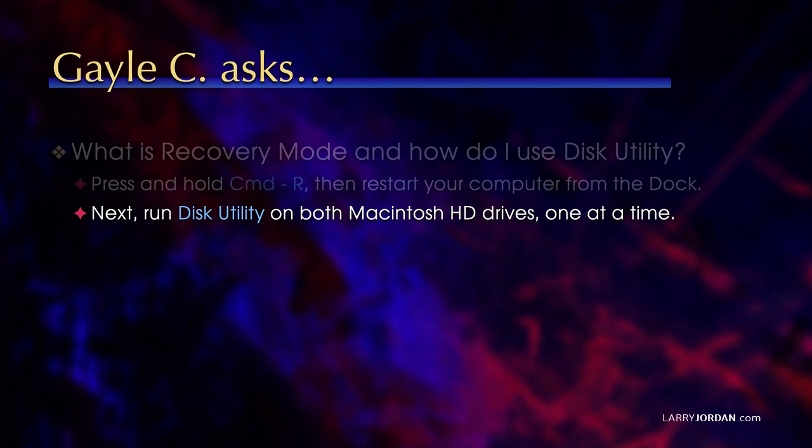What you'll see with an APFS volume — which is the new file structure within Macintoshes — is there will be two Macintosh HD drives on your system: Macintosh HD and Macintosh HD Data. Select each one of them inside Disk Utility and repair. This is much better than trying to run Disk Utility while you're also booted off the disk that you're repairing.